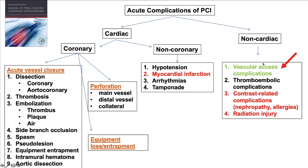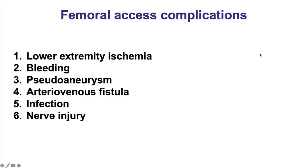Access complications are part of the non-cardiac acute complications of PCI, along with thromboembolic complications, contrast-related complications, and radiation injury. There are several potential femoral access complications that can be broadly thought of as problems that cause occlusion of the vessel, causing lower-extremity ischemia, or problems that compromise the integrity of the vessel wall, leading to perforation, bleeding, formation of a pseudoaneurysm, or a connection with the vein, which is an arteriovenous fistula. Also, infection and nerve injury can happen.